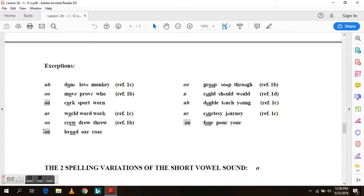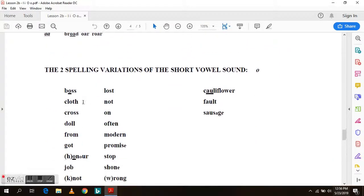The oa as an or sound in broad, or, raw. The ou as an oo sound in group, soup, through. As an uh sound in could, should, would. As an uh sound in double, touch, young. As an er sound in courtesy, journey. And as an or sound in fall, poor, your.